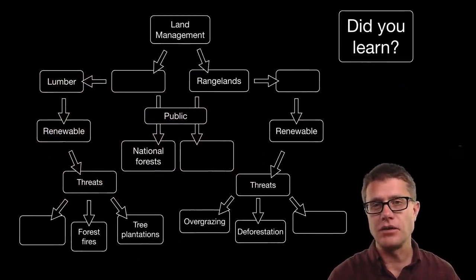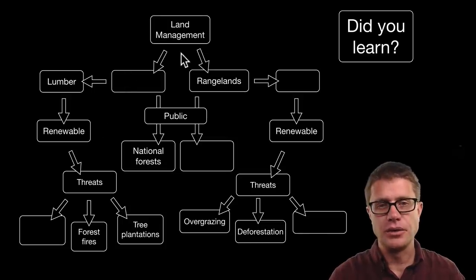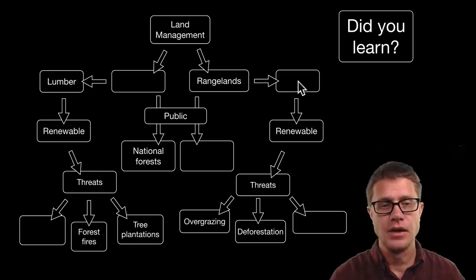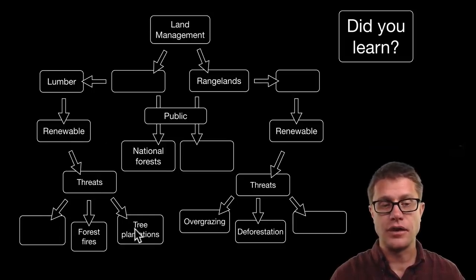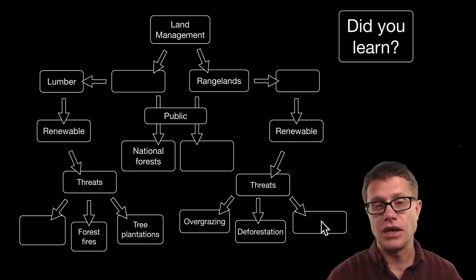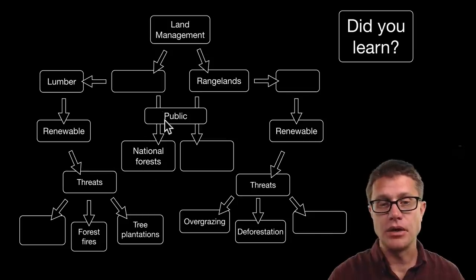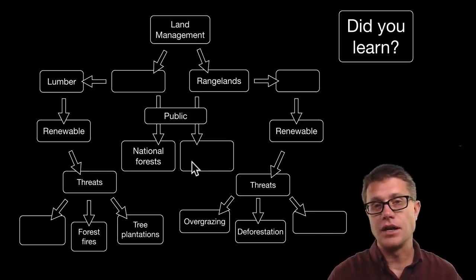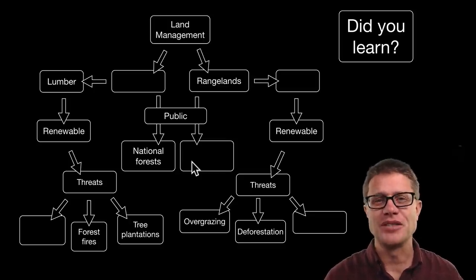So did you learn the following? Land management of forests for lumber and rangelands for things like cattle should be renewable. The threats to that are old growth forests, forest fires, and tree plantations. Remember overgrazing and deforestation can lead to desertification. A lot of this is private, but we also have public ownership — the US Forest Service manages national forests, and federal rangelands are administered by the BLM. I hope that was helpful.